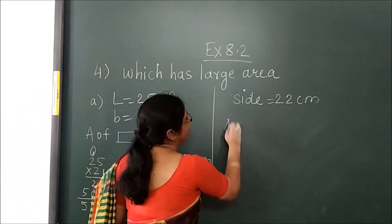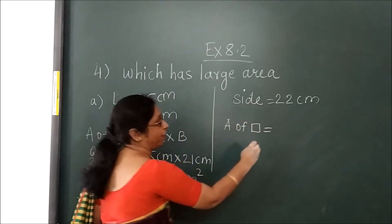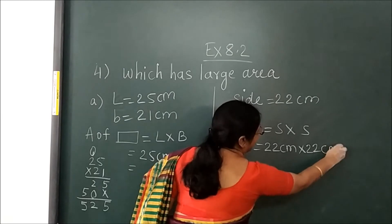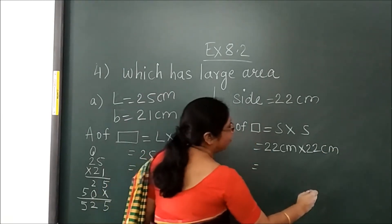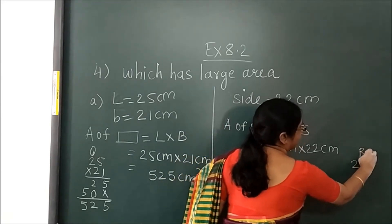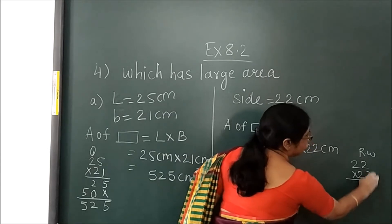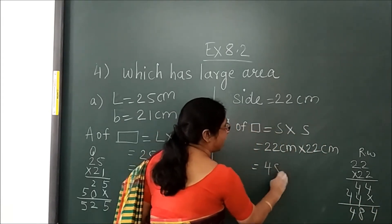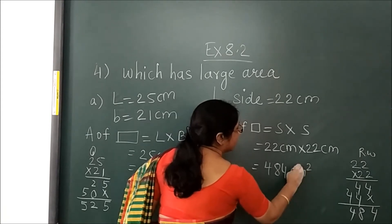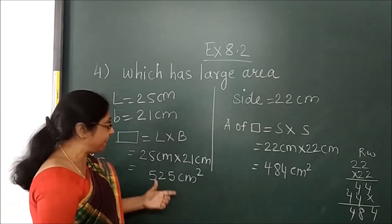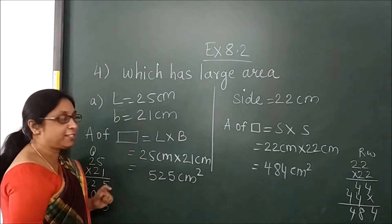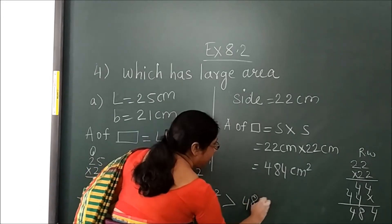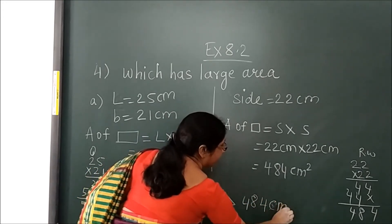Here you will carry out the area of a square, because side is given. So side into side: 22 centimeter multiplied by 22 centimeter. 22 into 22 — you can carry out rough work. 2 twos are 4, 2 twos are 4, again 2 twos are 4, 2 twos are 4 — you get the answer 484. So 484 centimeter squared. The area of the rectangle, 525 cm², is larger than the square area, 484 cm².